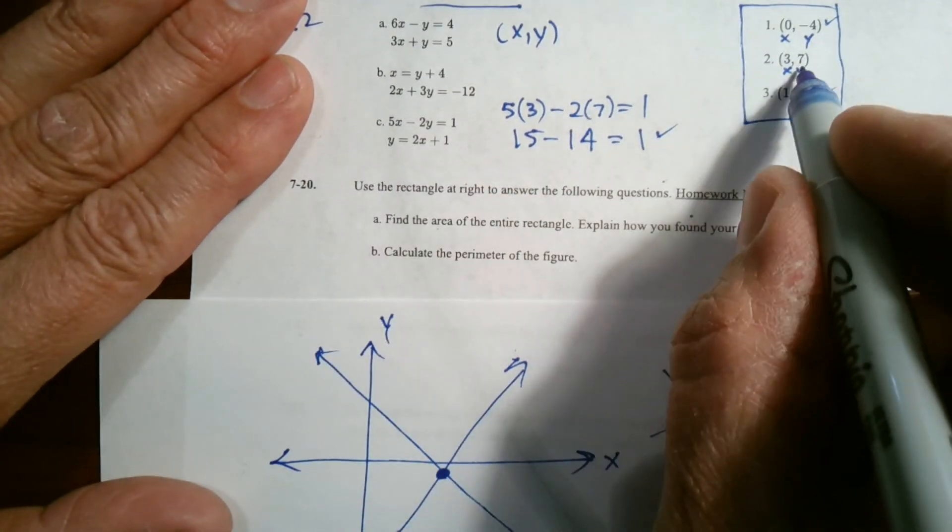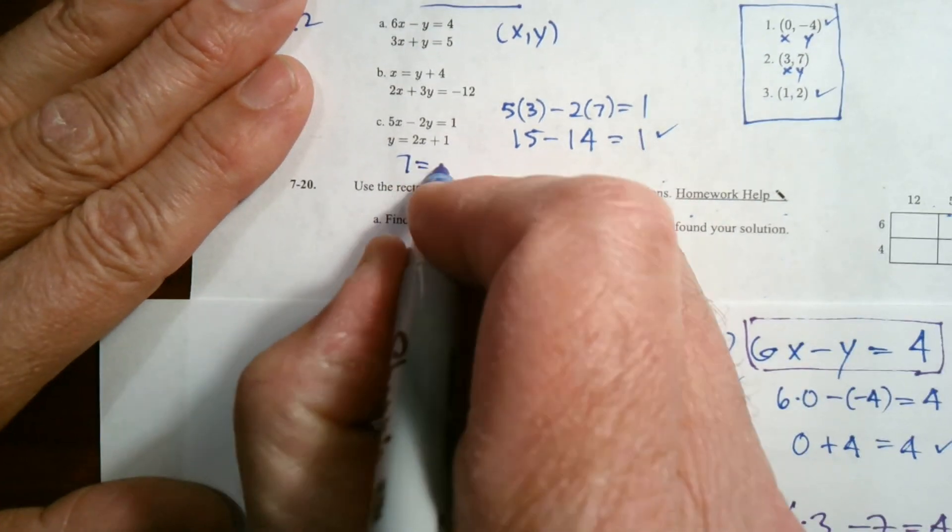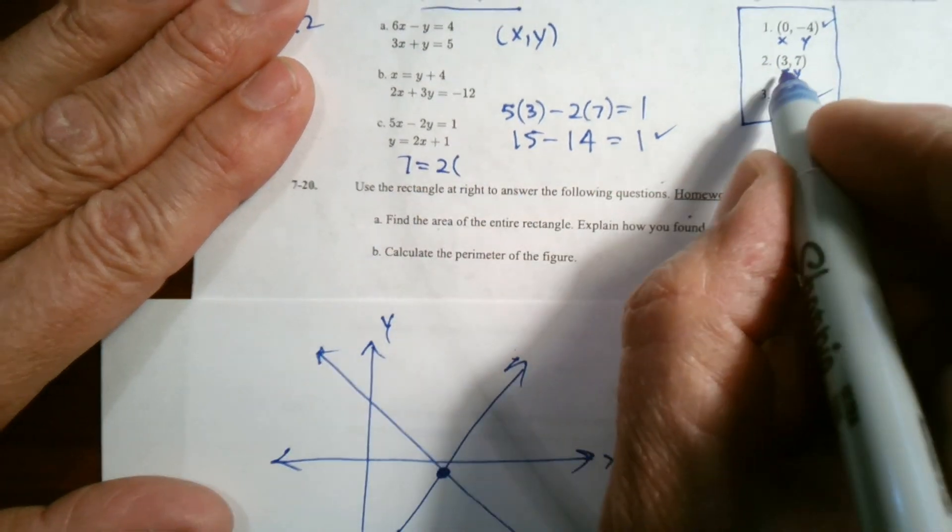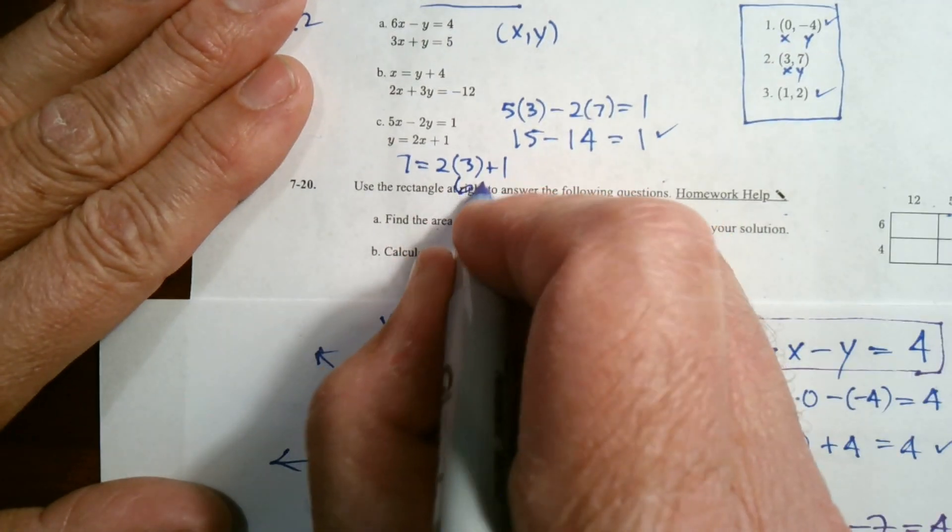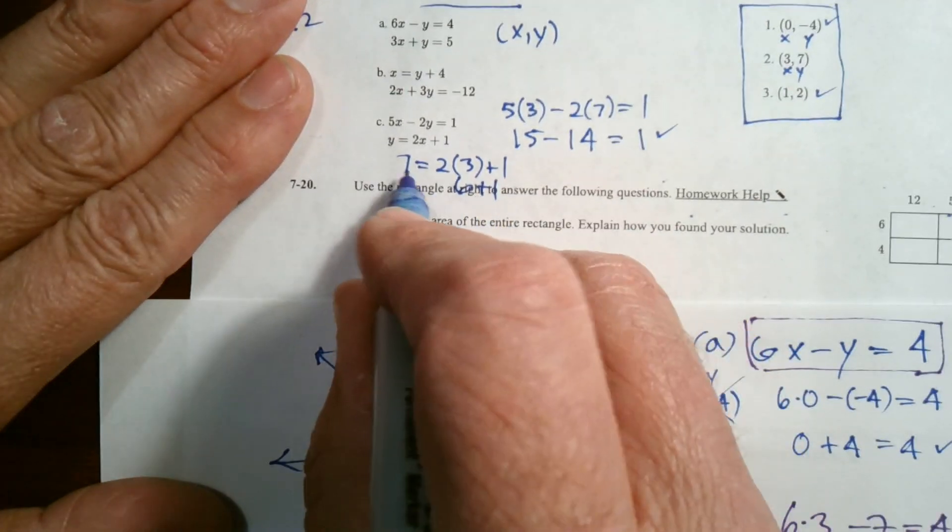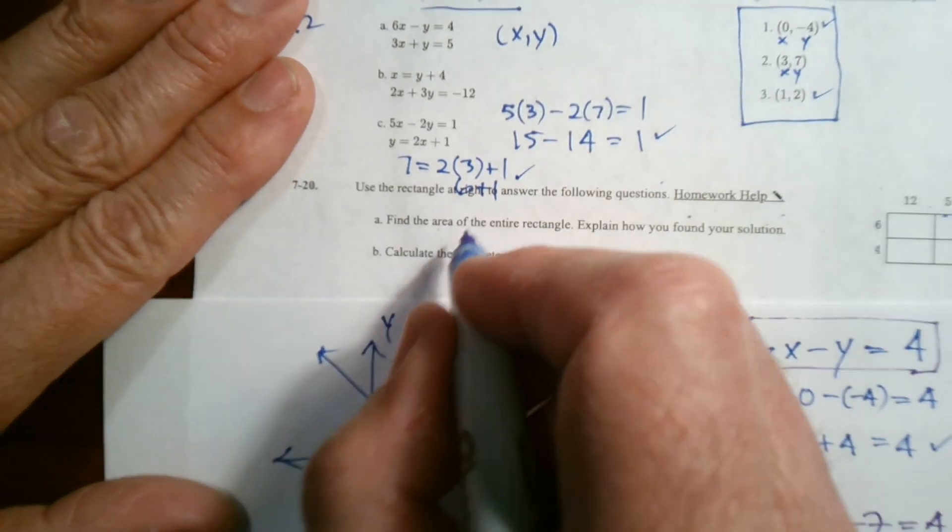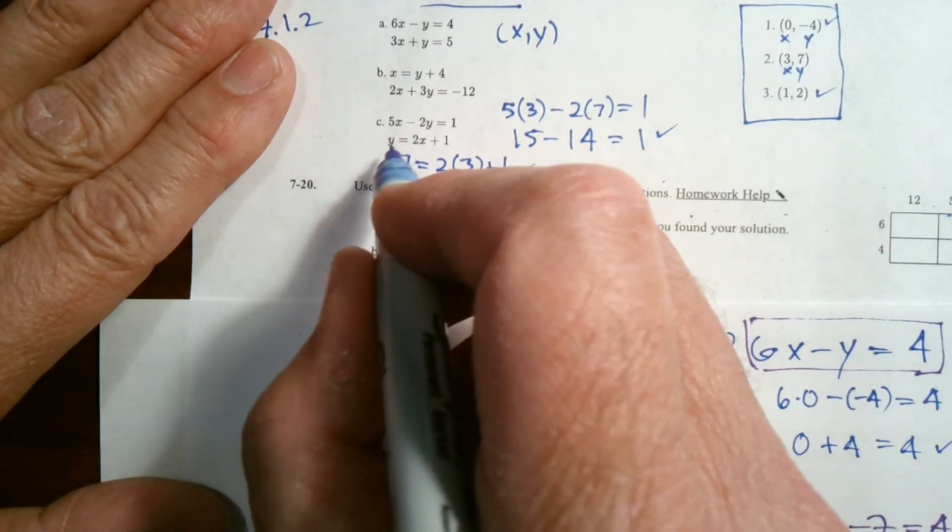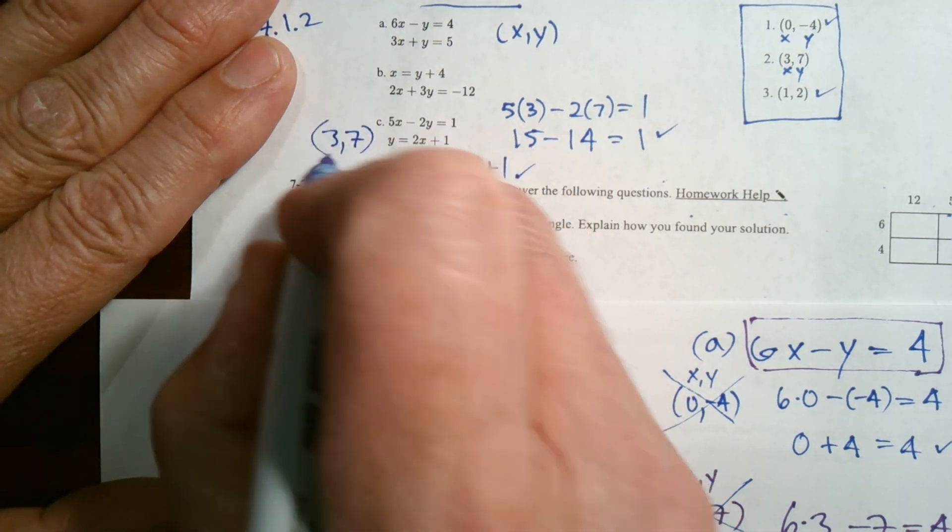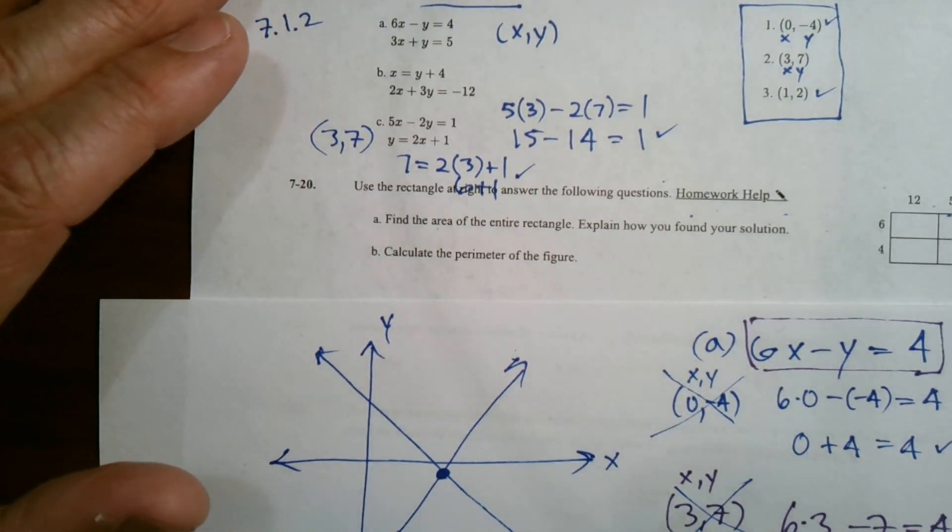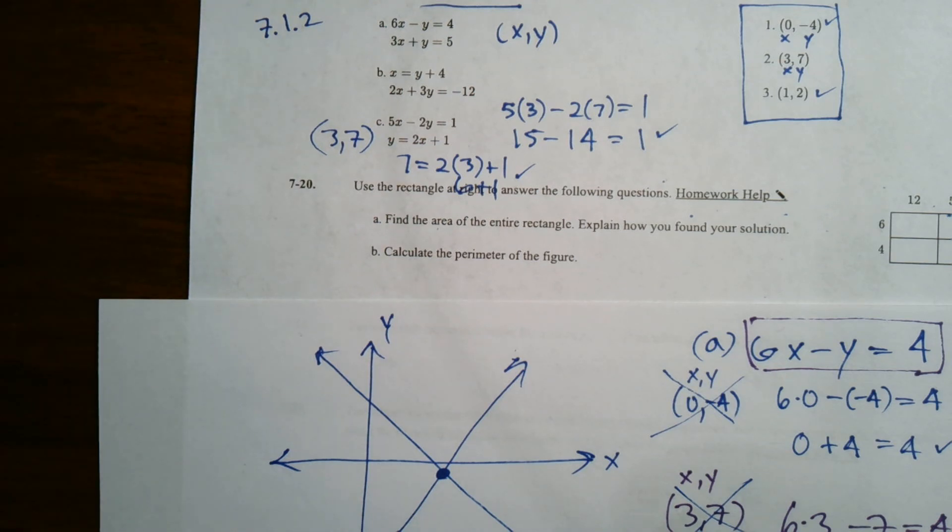So let's check this one. So this one would be, y is 7. So 7 equals 2 times, the x is 3, 2 times 3 plus 1. Is that true? Yeah, 2 times 3 is 6 and 6 plus 1 is 7. So yeah, that works out as well. So the solution to C is 3 comma 7. So I've got my answers there for each of those and my reasons why.